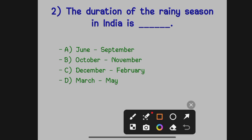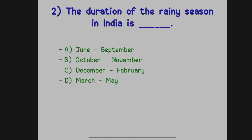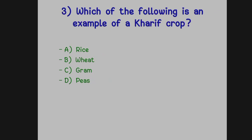The correct answer is Option A, June to September. Now the next question: which of the following is an example of a Kharif crop?